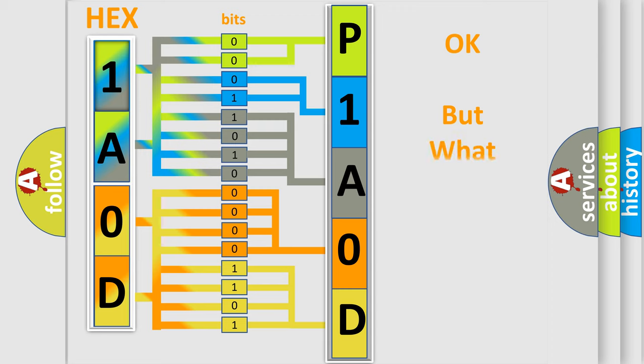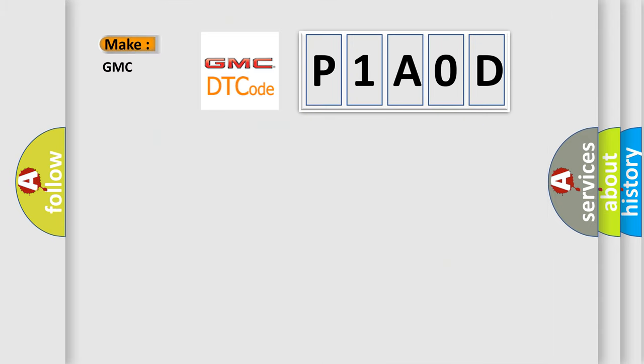The number itself does not make sense to us if we cannot assign information about what it actually expresses. So, what does the Diagnostic Trouble Code P1A0D interpret specifically for GMC car manufacturers?